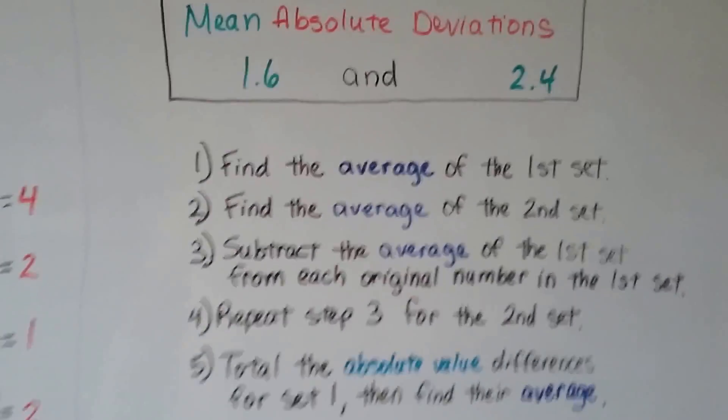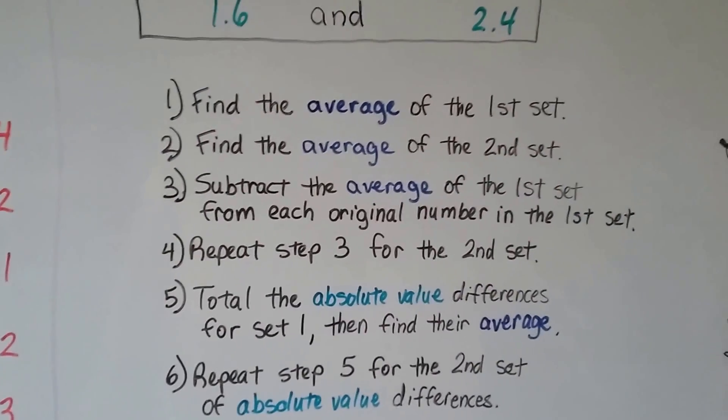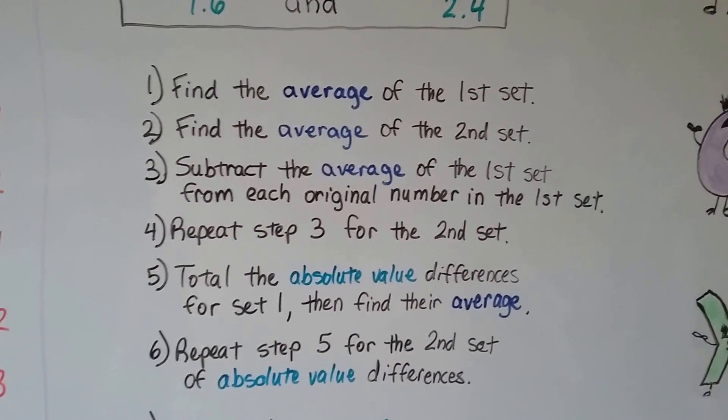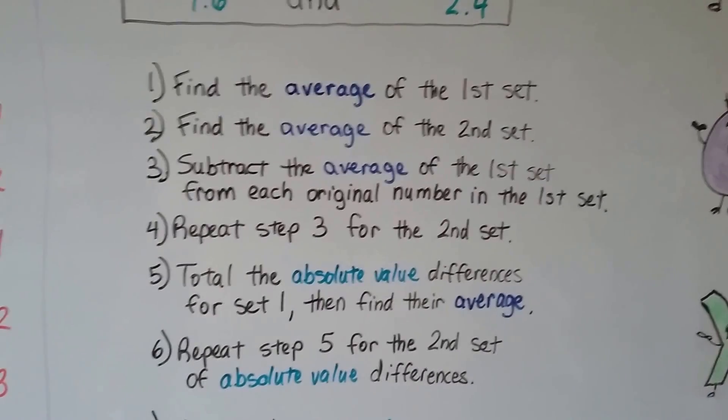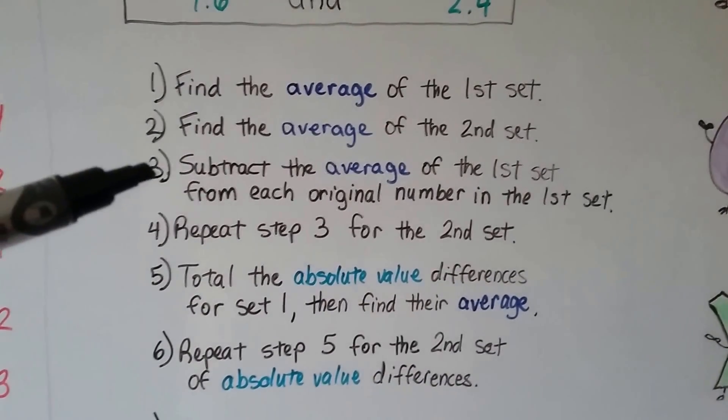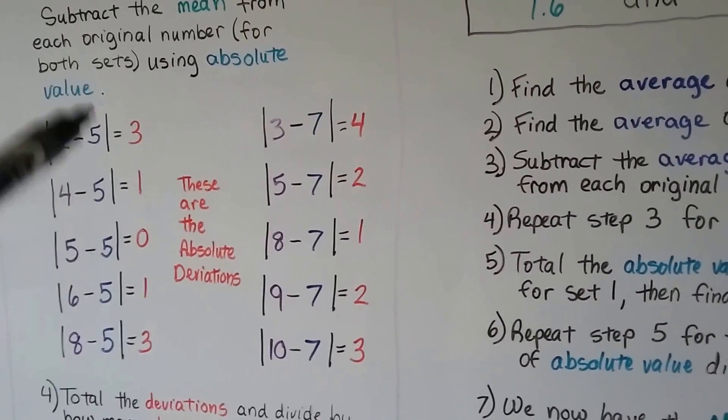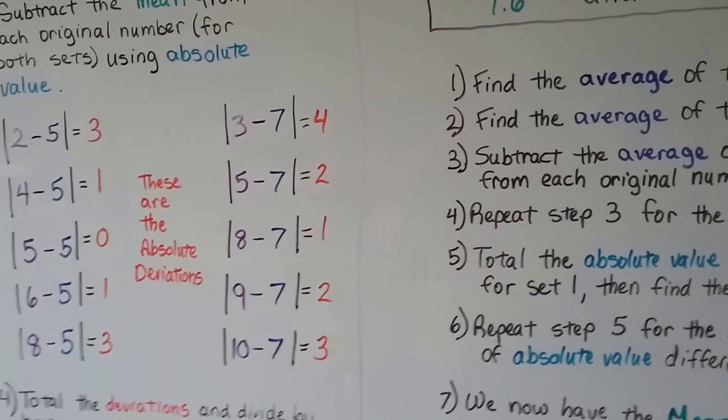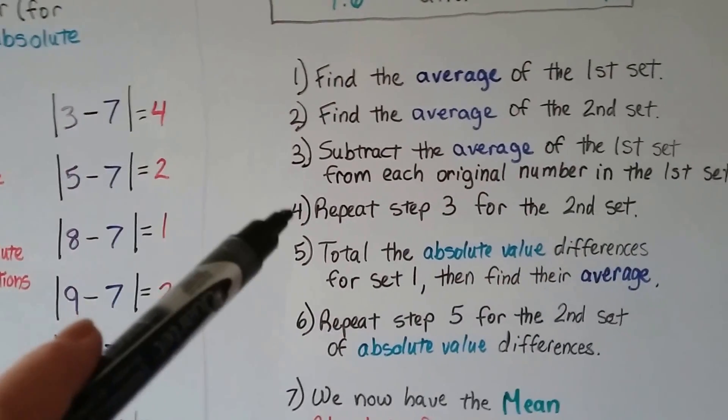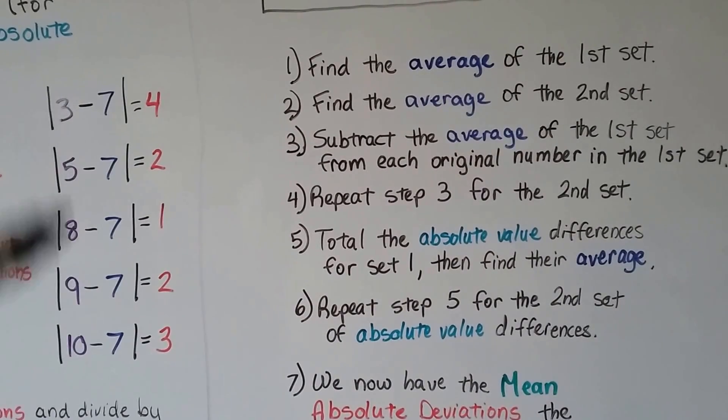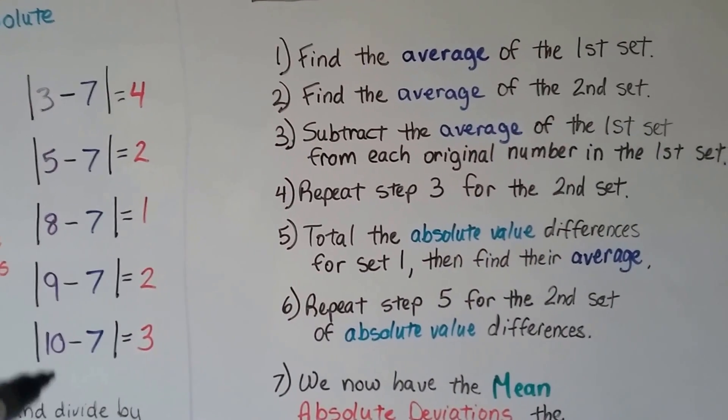So, again, here's what we did. We find the average of the first set. We find the average of the second set. Then we subtract the average of the first set from each original number in the first set. We subtract the average, that 5, from each of those original numbers. We repeat step 3 for the second set. We subtract the average from those original numbers.